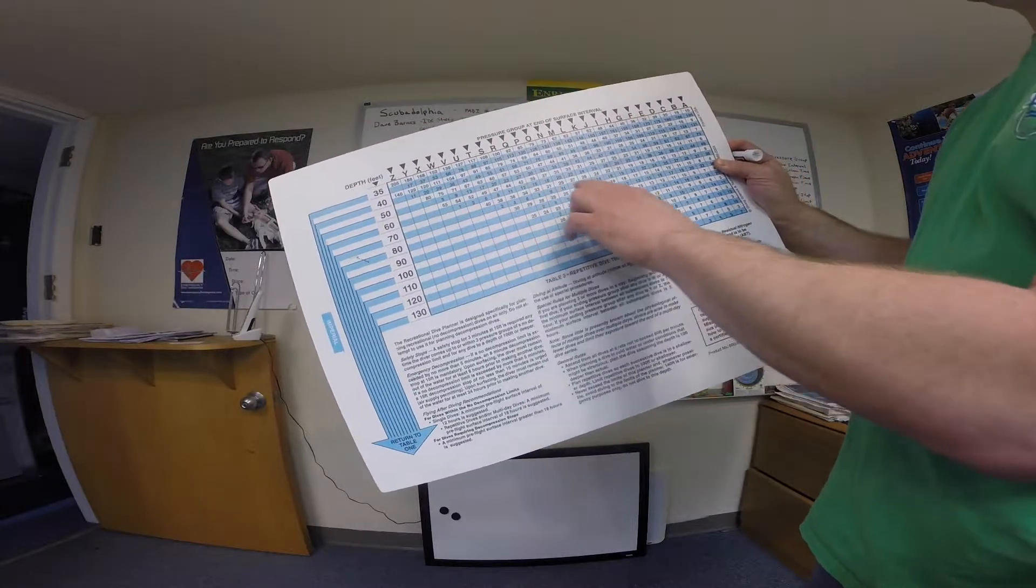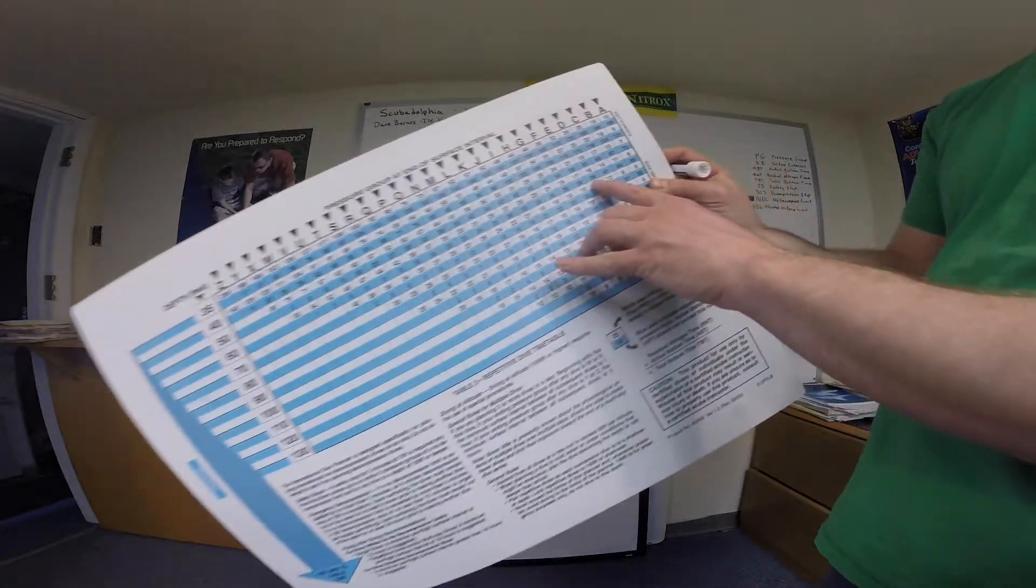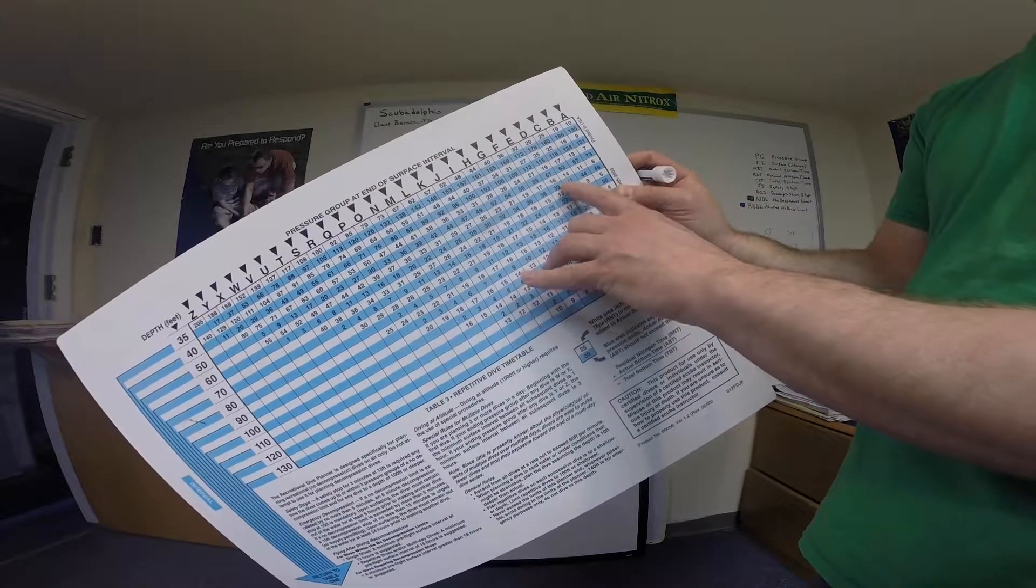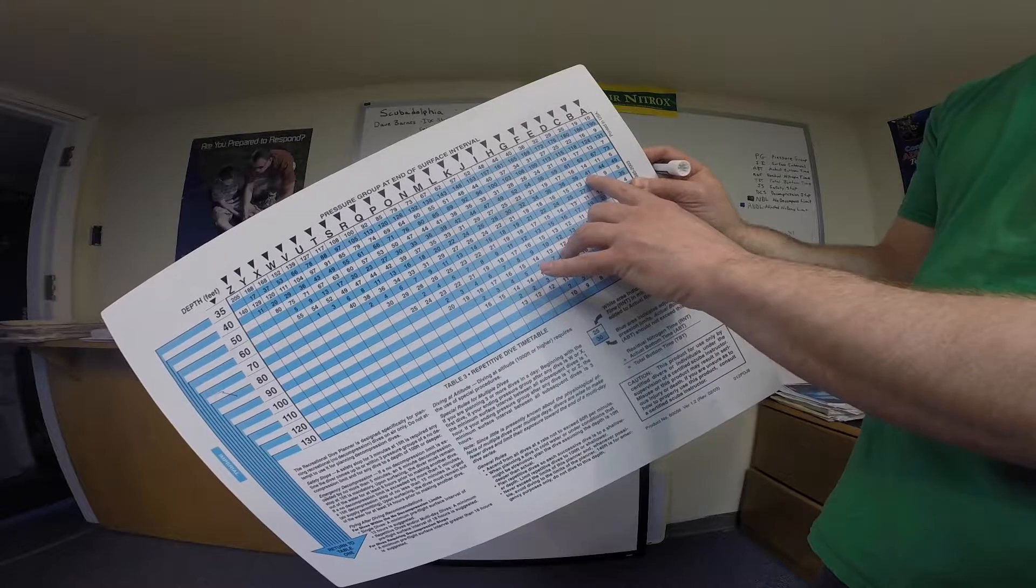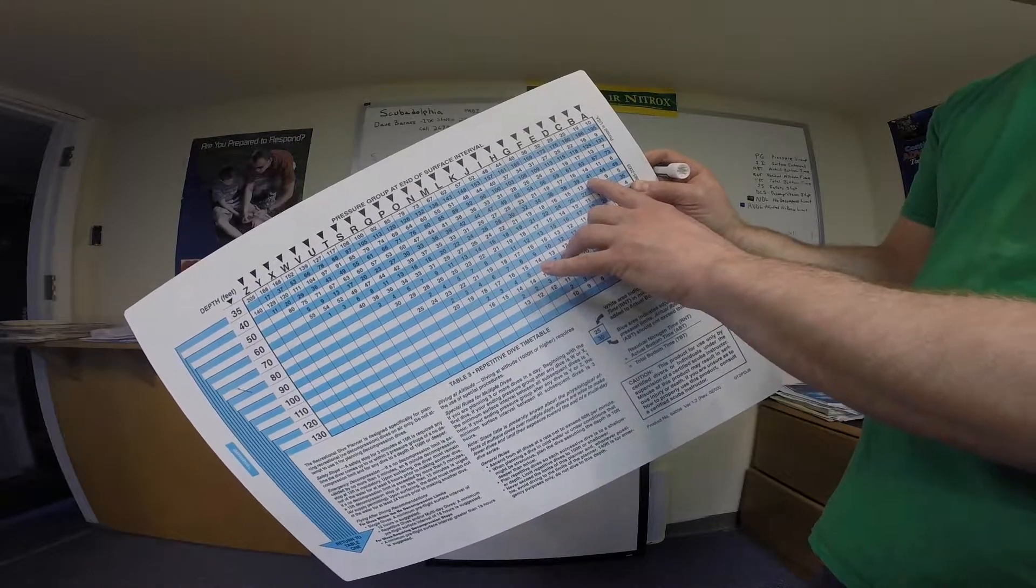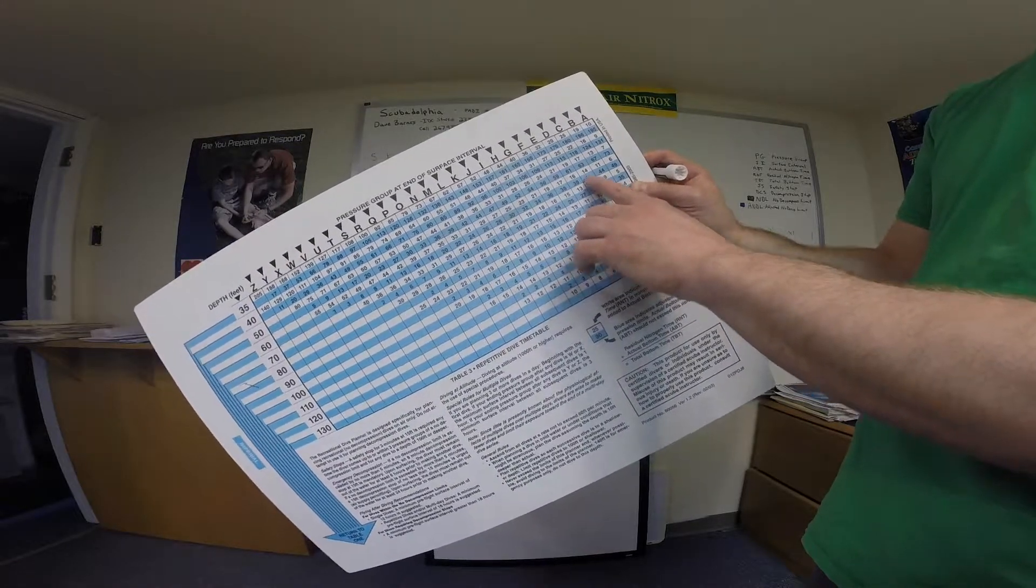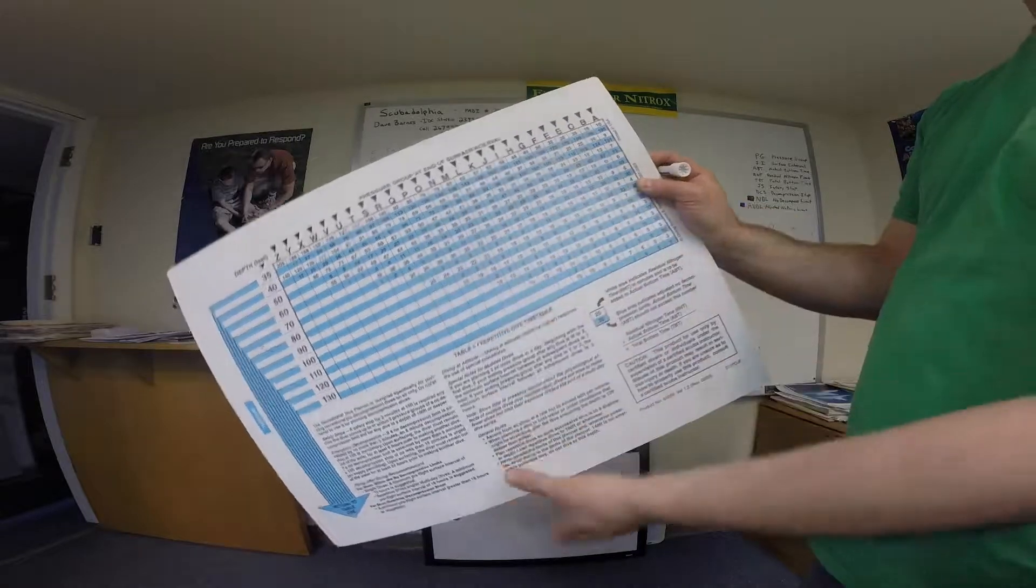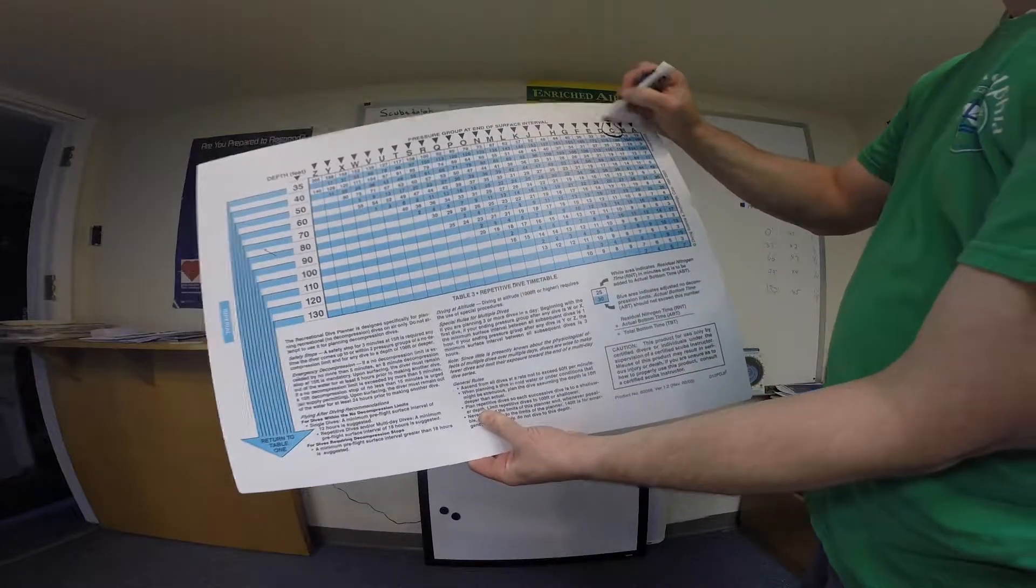Come across until you find 40. 40 is not on here. So 39, we'll have to go up to 41. And then let's go up from there. So the dive is going to be 40 minutes, but we have to plan for 41. Go up to a C or a C pressure group there.